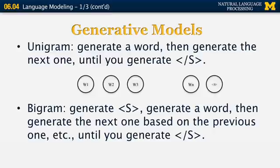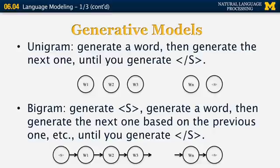So the graphical model looks very different though. It looks like this. We have conditional probabilities between every pair of words until the end.